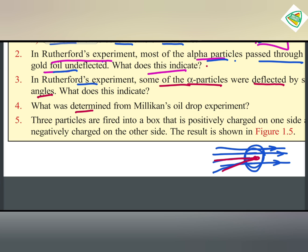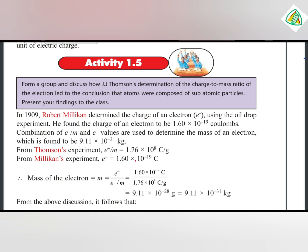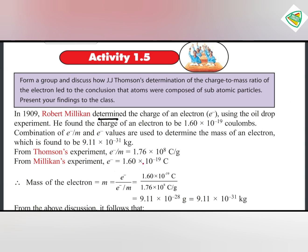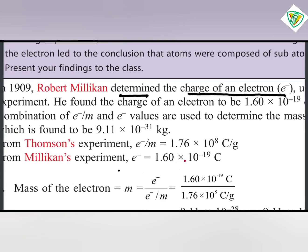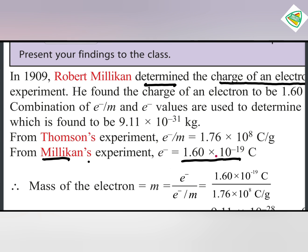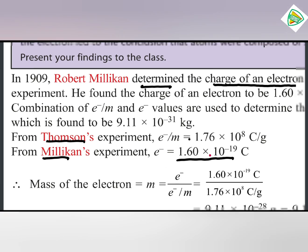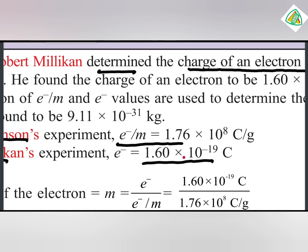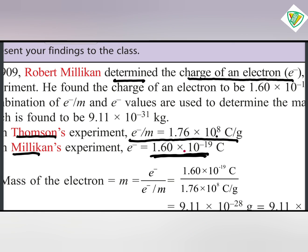What was determined from Millikan's oil drop experiment? Millikan's oil drop experiment determined the charge of an electron: 1.60 times 10 to the power of minus 19 coulombs.